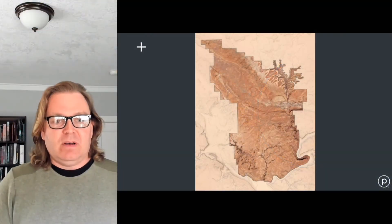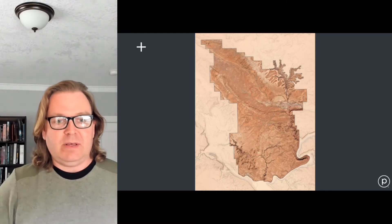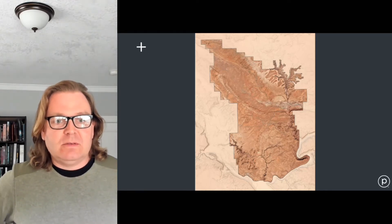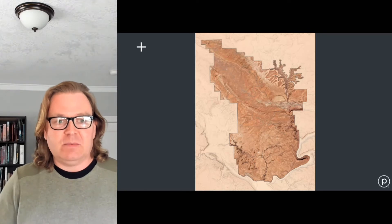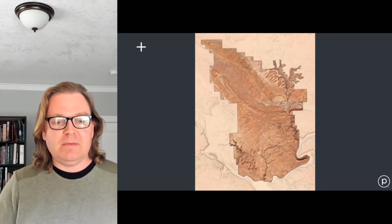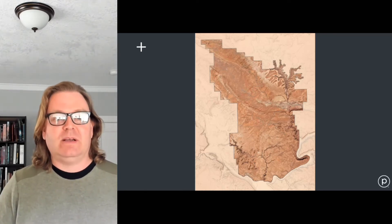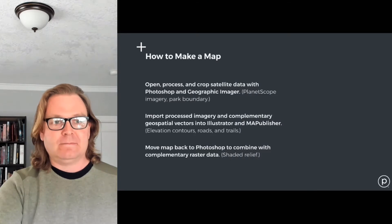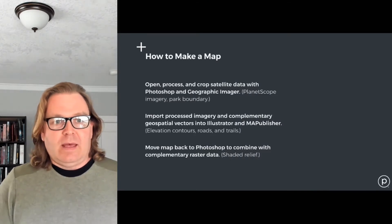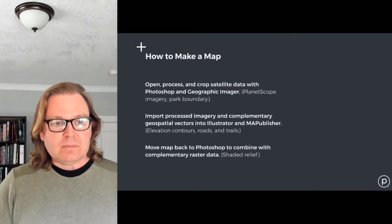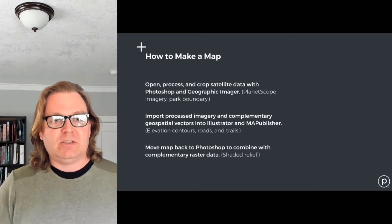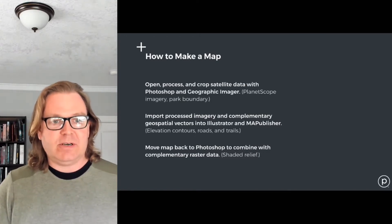Here's an example of our finished product using the PlanetScope 3 meters per pixel four-band imagery combined with some other data to make a map showing Arches National Park in Utah. Our process for doing this involves Geographic Imager, Photoshop, Map Publisher, and Illustrator.